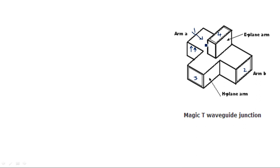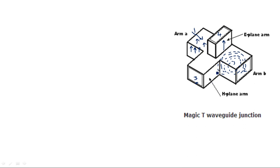When the signal propagates from port 1 to port 2, the electric field is in either the upward or downward direction. The E-arm is connected in the upward direction on the top — that's why it is called the E-field arm. The magnetic field is always in the circular fashion, spread horizontally. The third port named the H-arm is placed in the direction of the magnetic field — that's why it is called the H-arm.